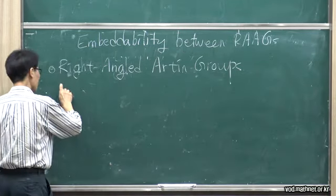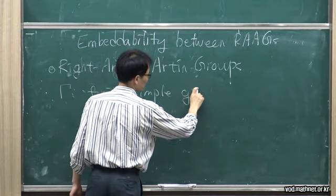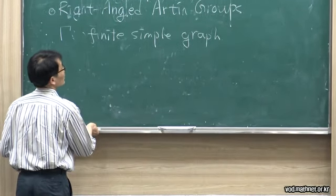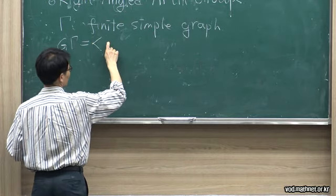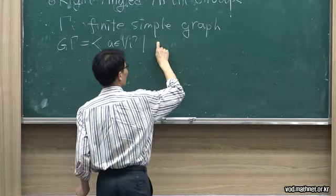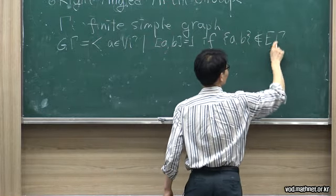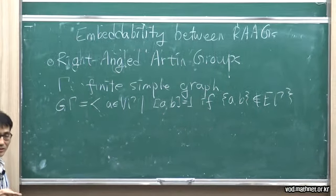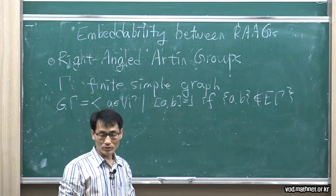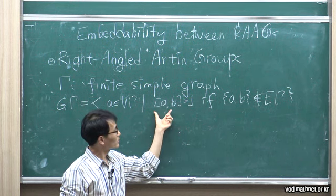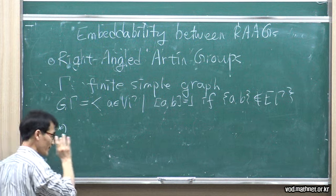Let Γ be a finite simple graph. Simple means there are no multiple edges and no multiple loops. We define a group G(Γ) which is generated by the vertices with the relation that AB commutes if AB is a non-edge. This is contrary to the usual convention — the usual convention is that an edge corresponds to non-commutation, but here our convention is that two vertices commute if there is a non-edge. I will keep this convention throughout the whole talk.